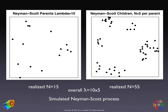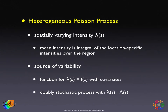The other way of thinking about clustering is as the result of a heterogeneous process. A heterogeneous Poisson process is the same as before, but instead of the mean being lambda times area, the mean lambda gets a subscript s for the location in space. Basically, the intensity changes with location. To quantify an overall mean intensity, you sum or integrate lambda_s over the whole region.